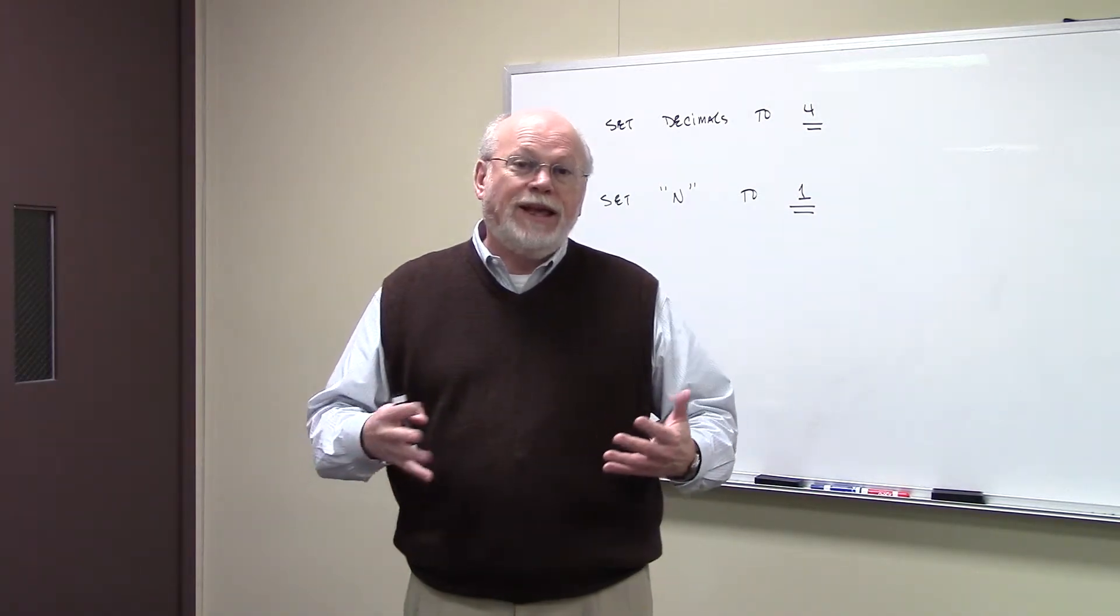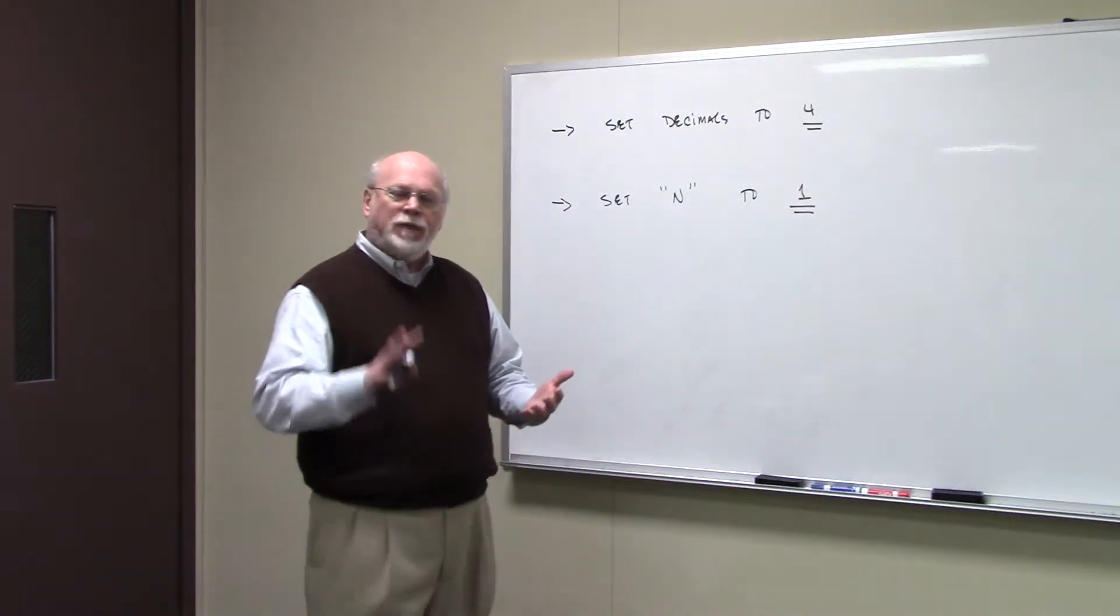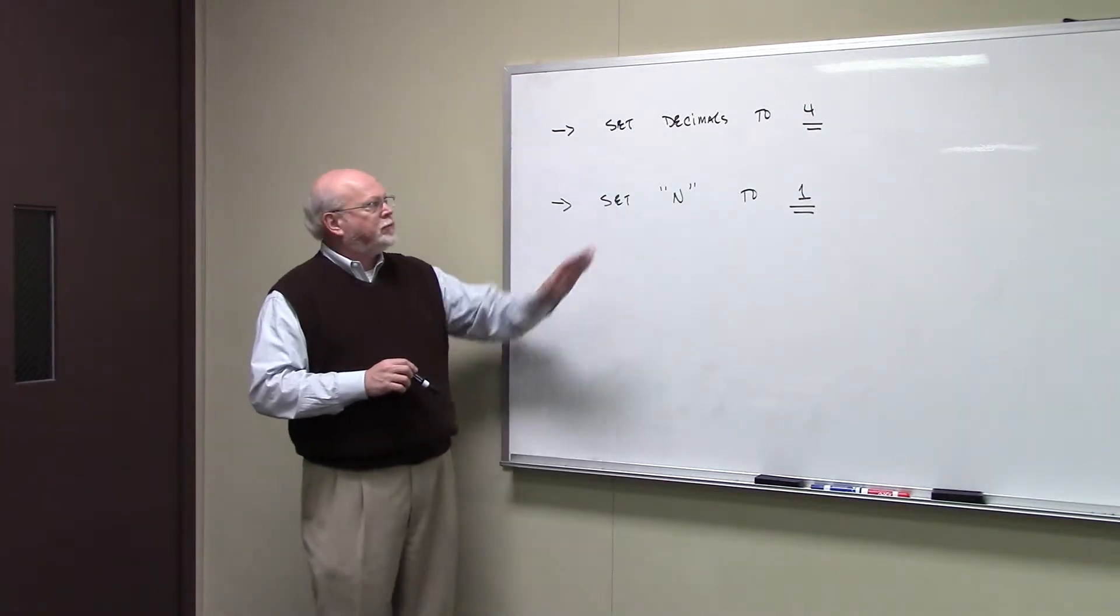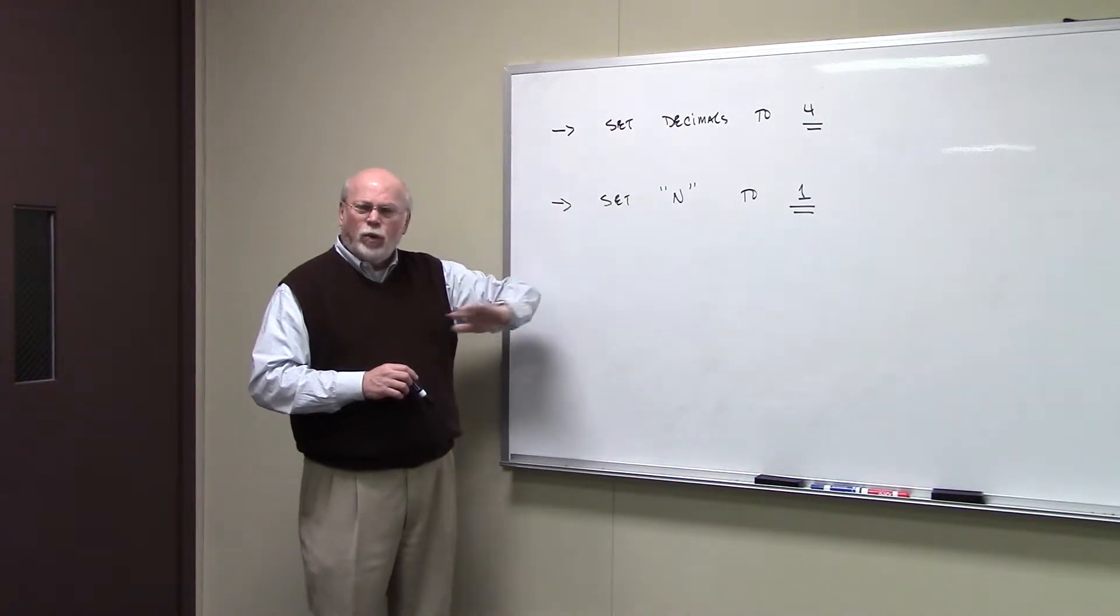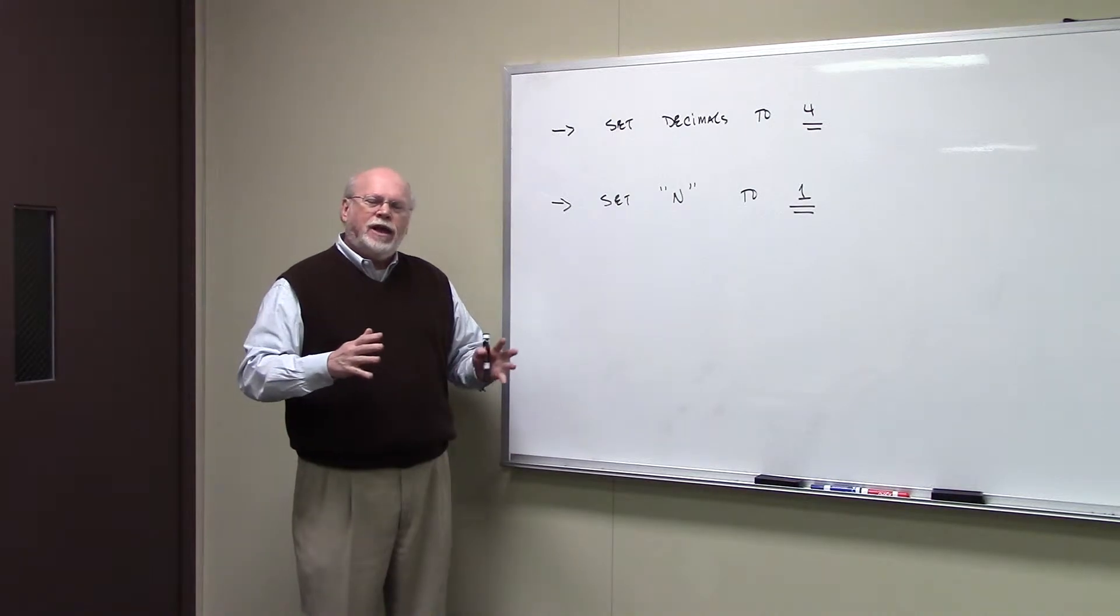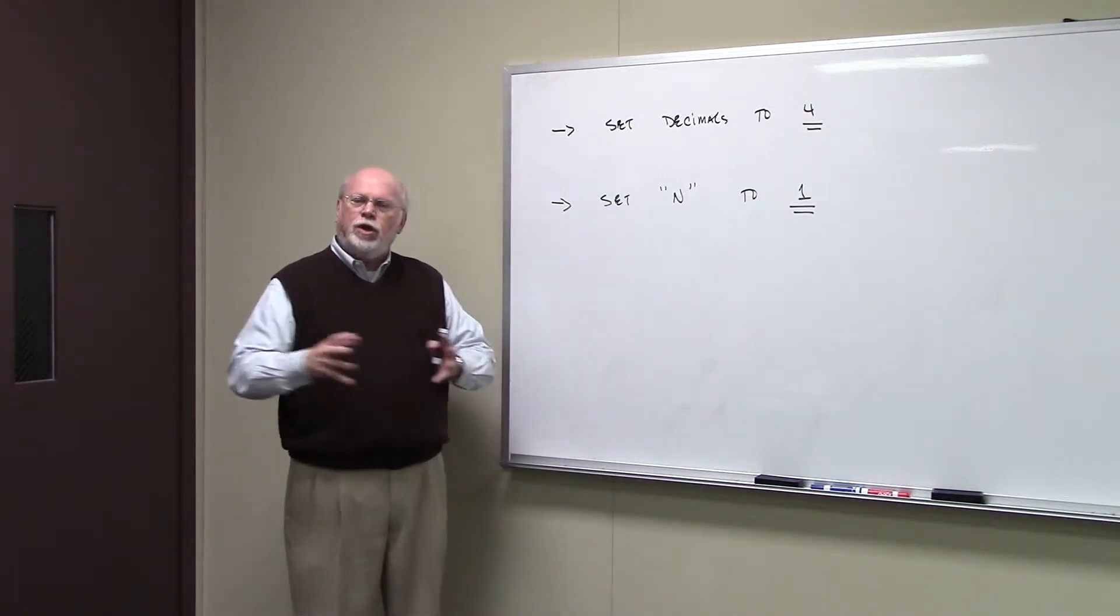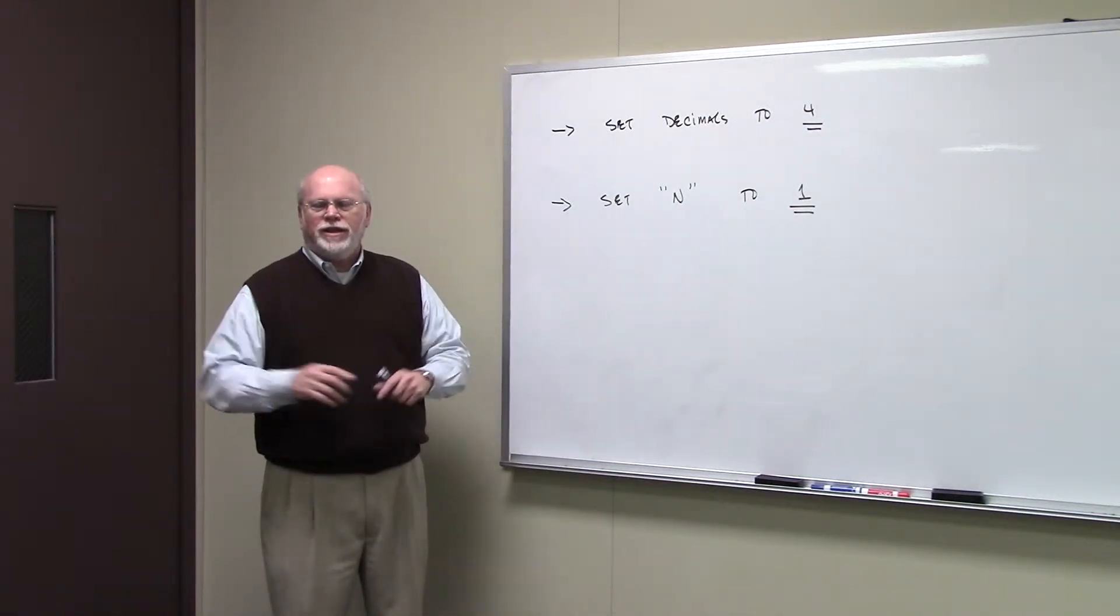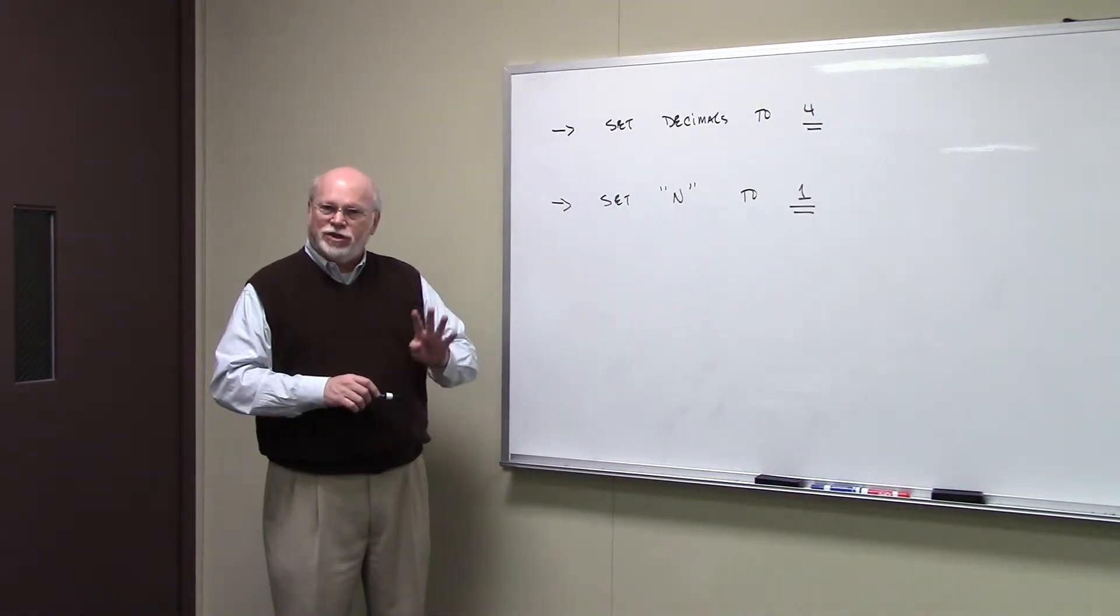So I want to make sure that everybody gets the same answers as we go through working calculators. A couple of things you need to do with your calculator, whichever one you want to buy is fine. You need to set the number of decimal places to four. If you round off too much in finance, you're going to end up down the road getting the wrong answer because a lot of times what we calculate in one part of the problem, we use in another part of the problem. And if you round off too much, the answer's going to look wrong. So to avoid that, set the number of decimal places to four.